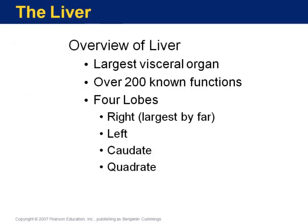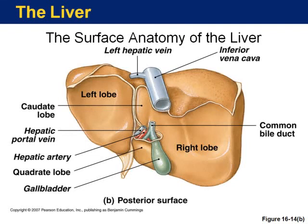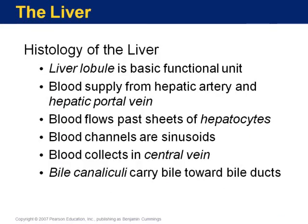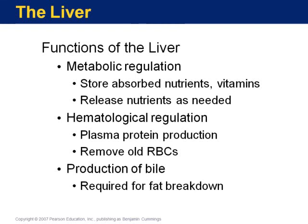That moves us to the liver — know that it has four lobes, though I'm not asking you to know the lobes specifically. We know that it has over 200 functions. The gallbladder is located on the underside of the liver. The liver actually secretes bile and the gallbladder stores it. Bile breaks down the large molecules of fat, so if you have a lack of bile in your system you would have trouble digesting fat. The liver produces bile, the gallbladder stores it, and one of the three main functions of the liver is metabolic regulation along with the production of bile.